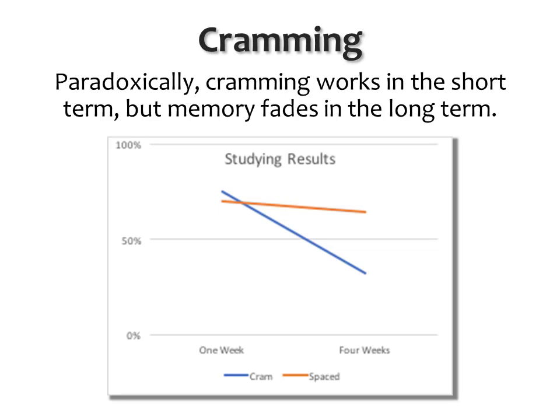Consider what is colloquially called cramming — a panicked, last-minute session to learn and absorb as much as possible in as short a time as possible. Paradoxically, cramming works in the short term, but memory fades in the long term. In this chart, the blue line shows outcomes for students who crammed, and the orange line shows spaced study, a term I'll explain later in this presentation. On the horizontal axis, above the heading one week, notice how the blue line is higher on the vertical scale than the orange line. This means that those who crammed did a little better on an assessment than the spaced studiers. However, move to the right and notice the results above the heading four weeks — the orange line is now significantly above the blue line. Cramming works, but it doesn't last.